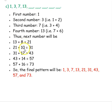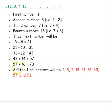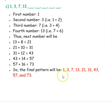Next we add 10: 21 plus 10 is 31. Then 31 plus 12 is 43. Then 43 plus 14 is 57. Then 57 plus 16 is 73. So the pattern will be 1, 3, 7, 13, 21, 31, 43, 57, and 73.